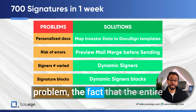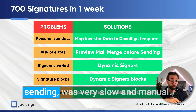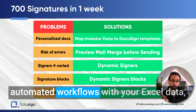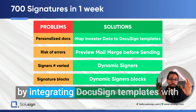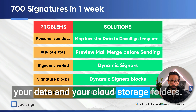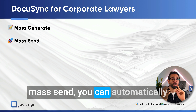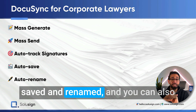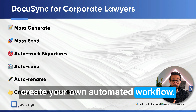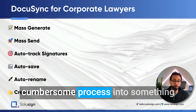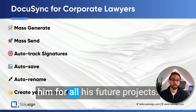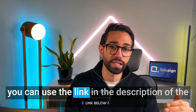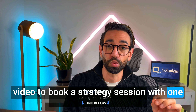This took care of David's last problem — the fact that the entire process beyond creating and sending was slow and manual. SoluSign allows you to create automated workflows with your Excel data by integrating DocuSign templates with your data and cloud storage folders. You can mass generate, mass send, automatically track signatures, and have signed documents automatically saved and renamed. If you're interested in automating your workflows, use the link in the description to book a strategy session with one of our document automation consultants.